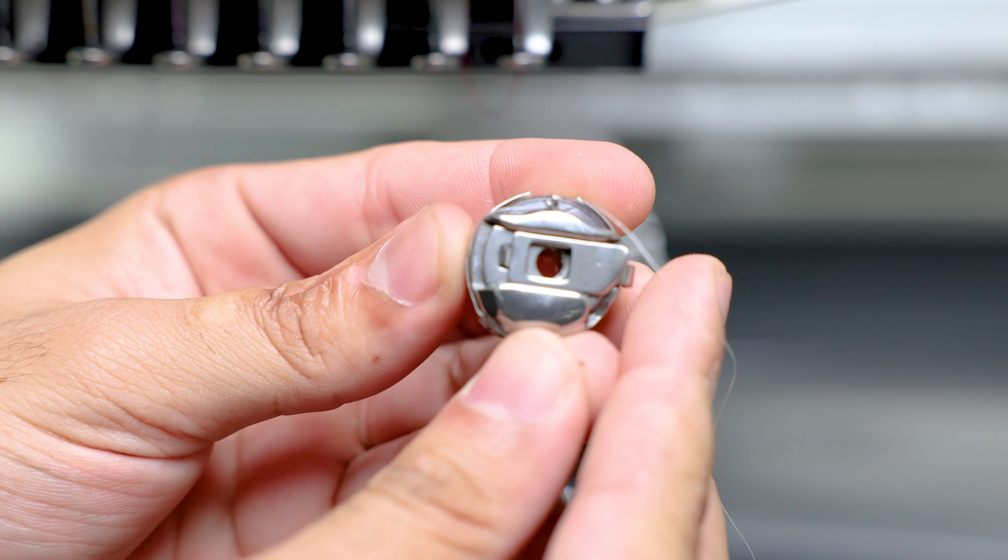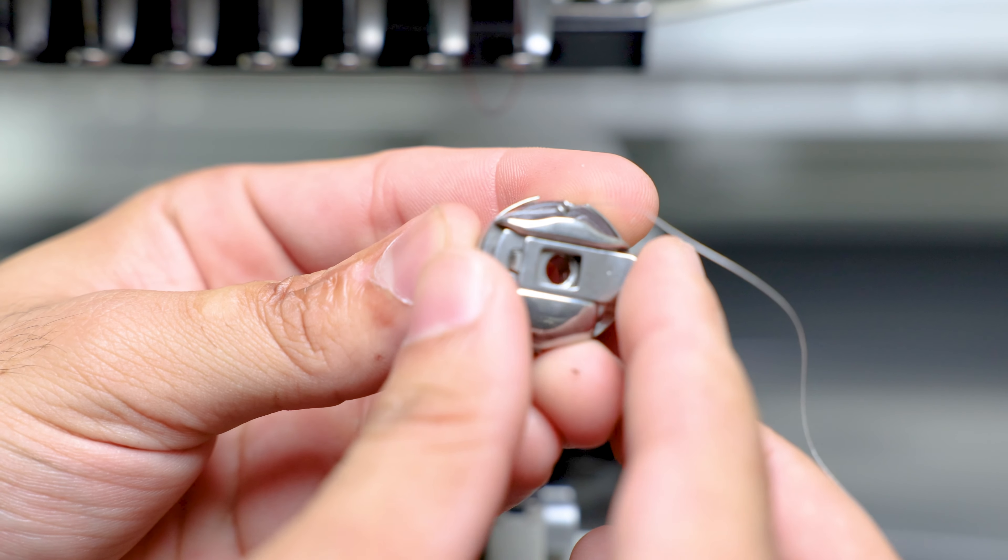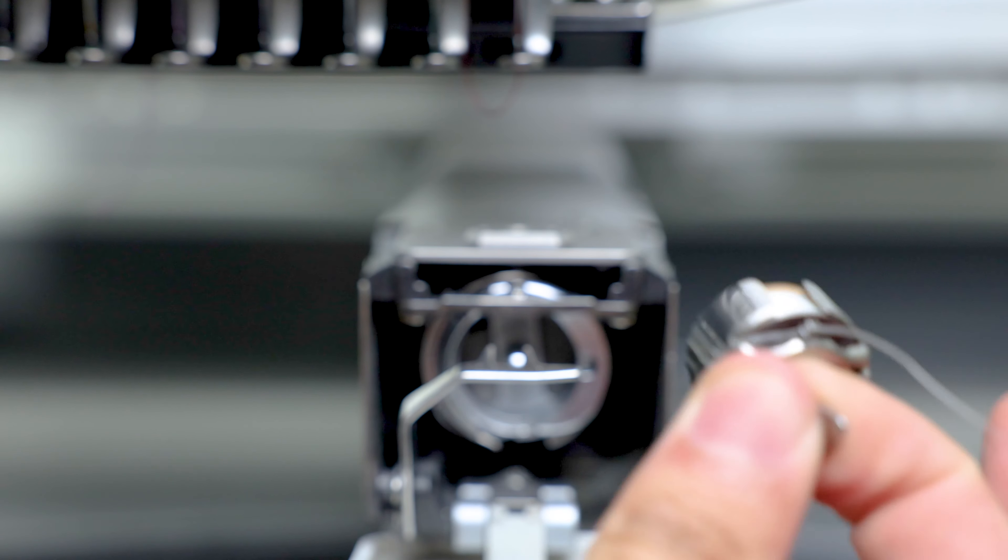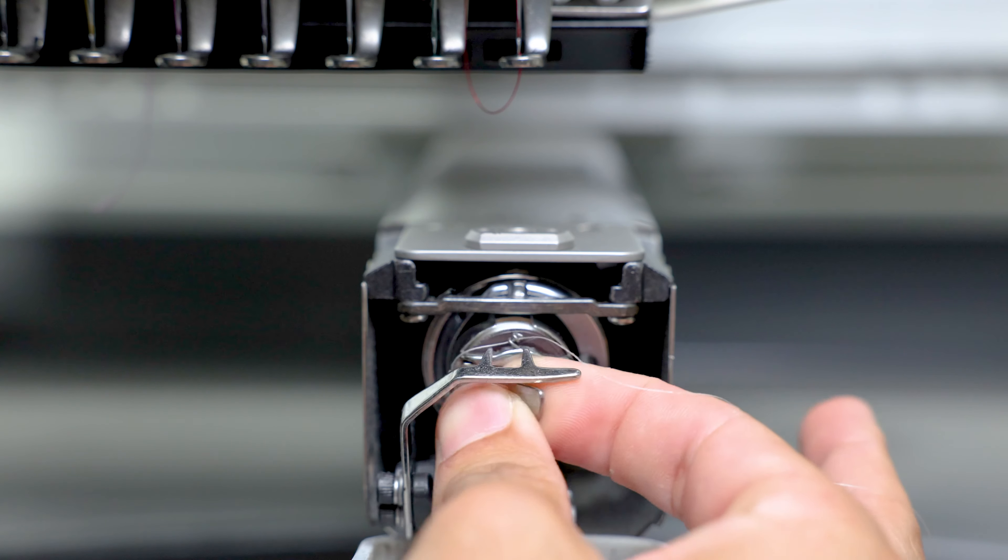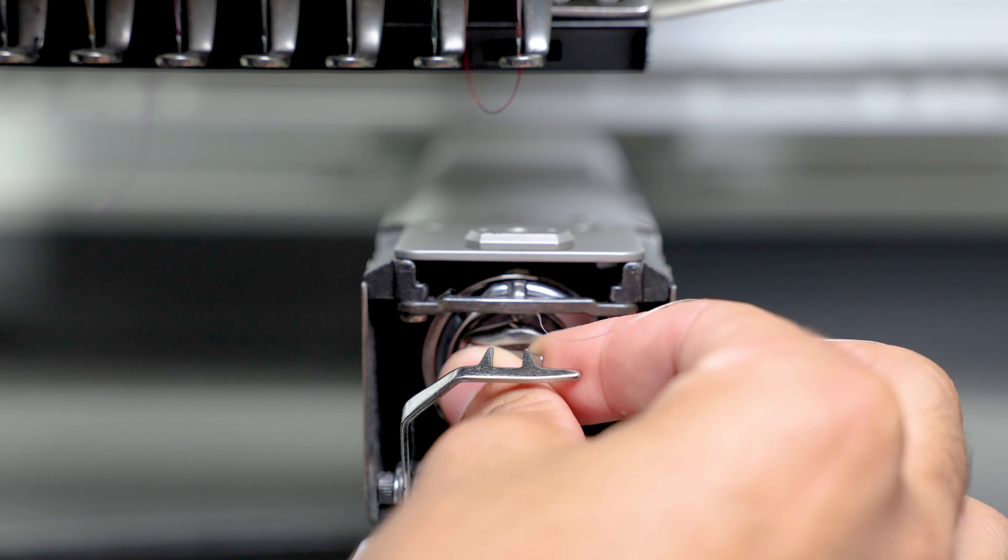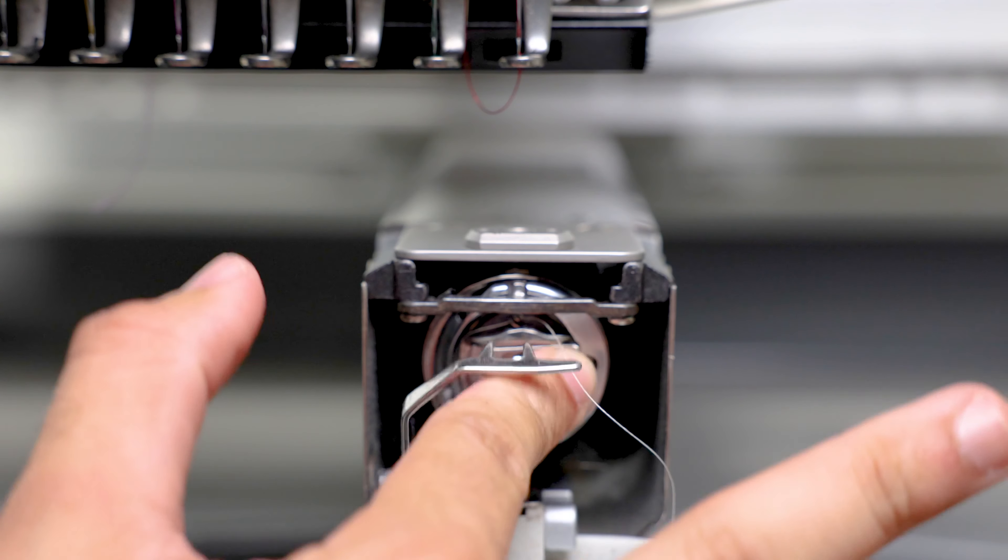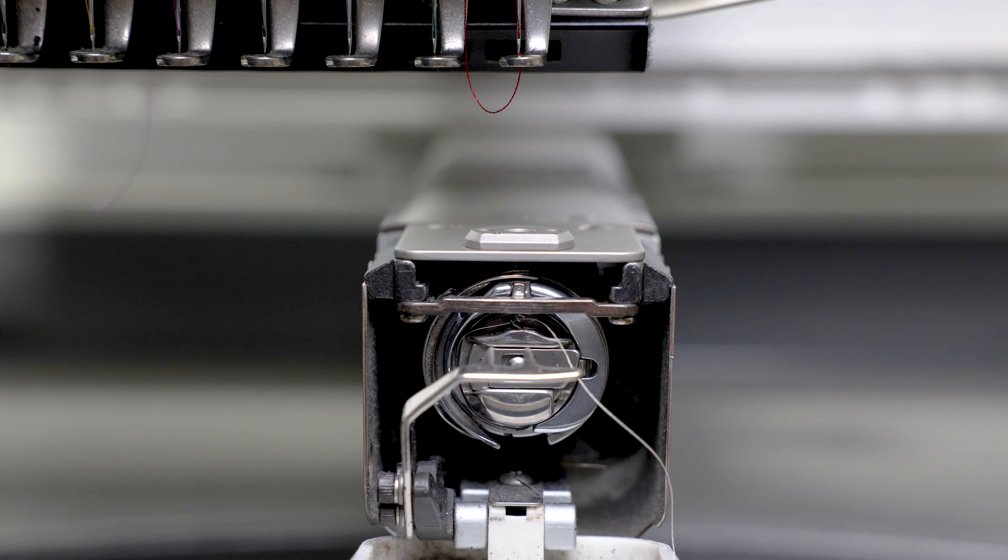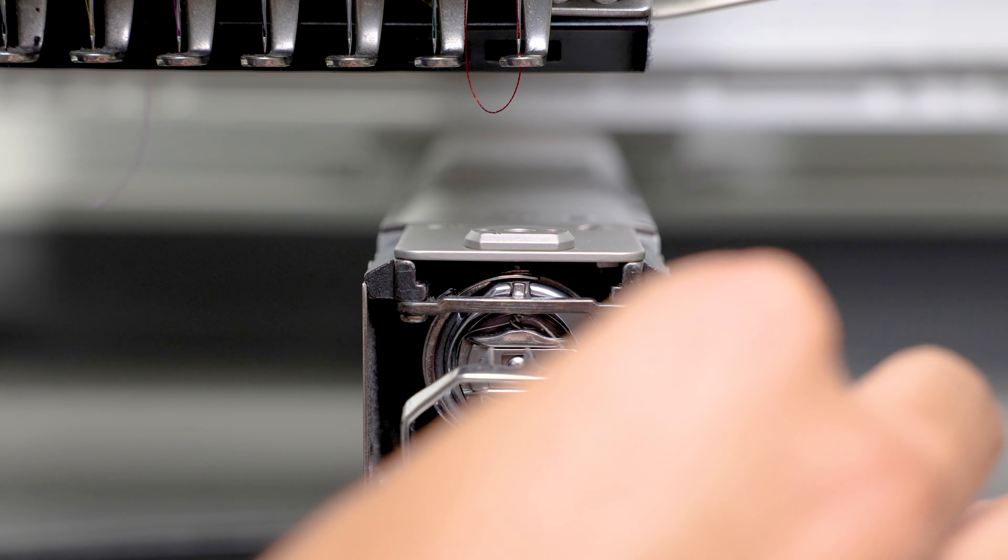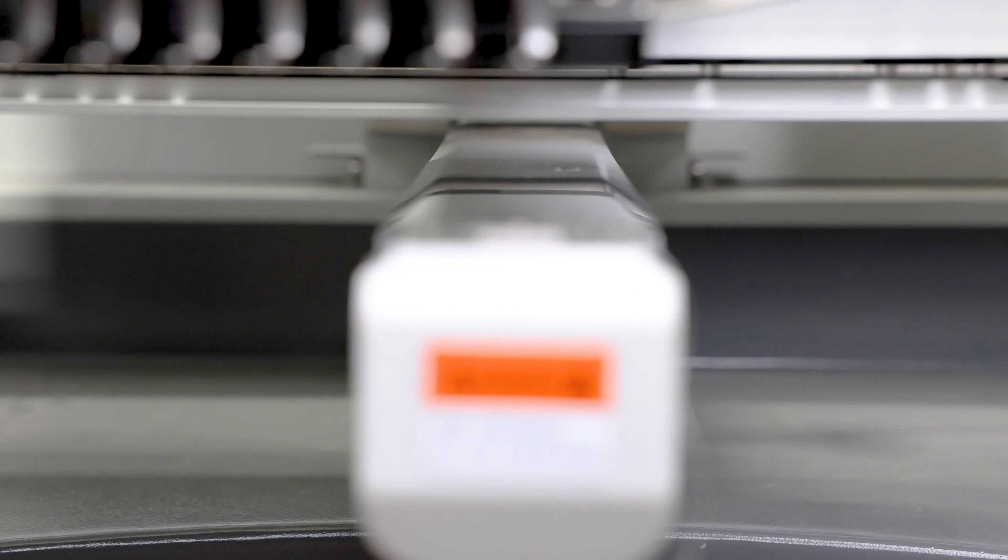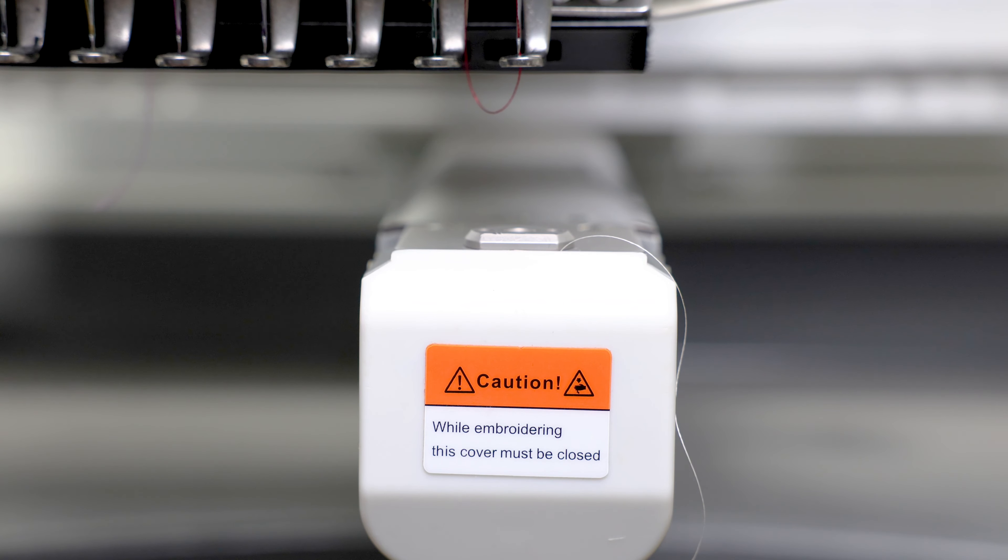Now, once you have your bobbin ready to go, you're going to grab it through here and then grab it like that. And then you're going to insert into the bobbin case in the machine like so. Now you want to make sure it doesn't move around and it's all the way in. It's always recommended to leave two, one inch of thread so it doesn't get stuck as it's starting to embroider.